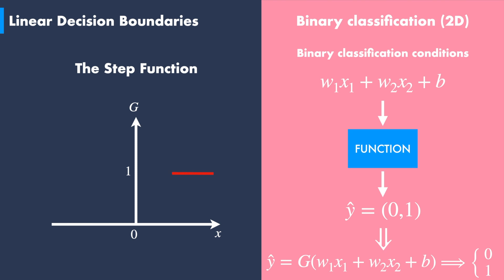In this kind of situation, the function g is represented by a so-called step function. As shown by this graph, any values of the input x will result in g taking either zero or one.